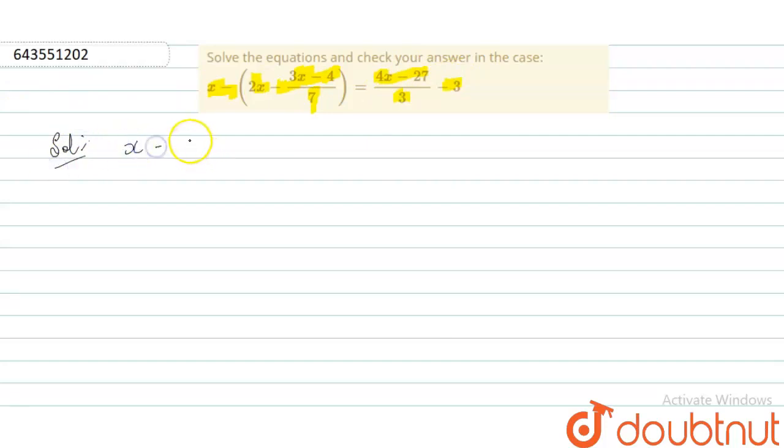So x minus (2x minus 3x minus 4)/7 equals (4x minus 27)/3 minus 3. What we will do is take the LCM. We will ignore this x, we will take it later.